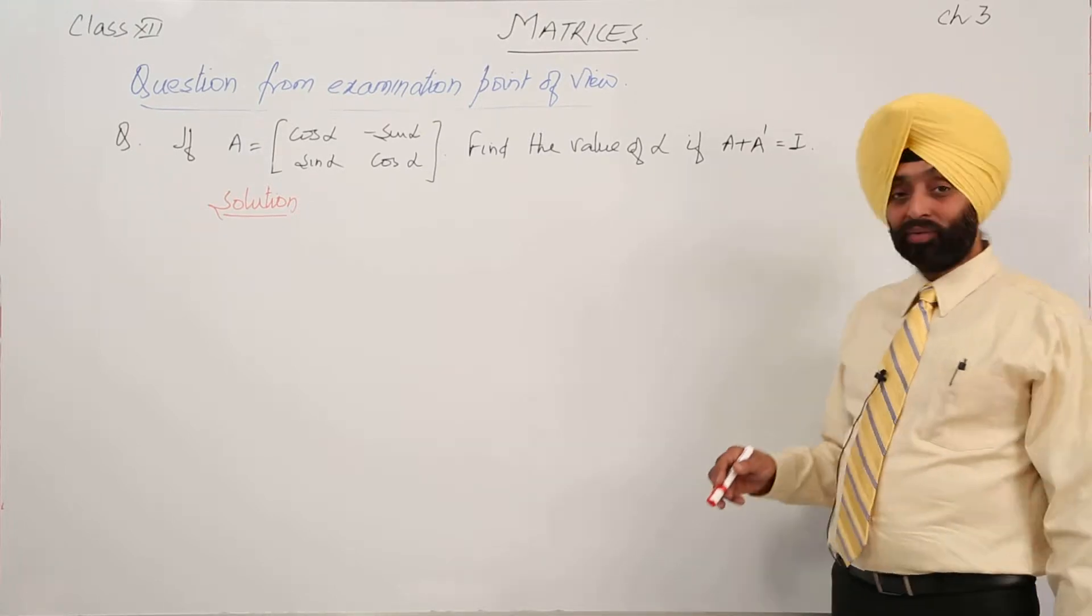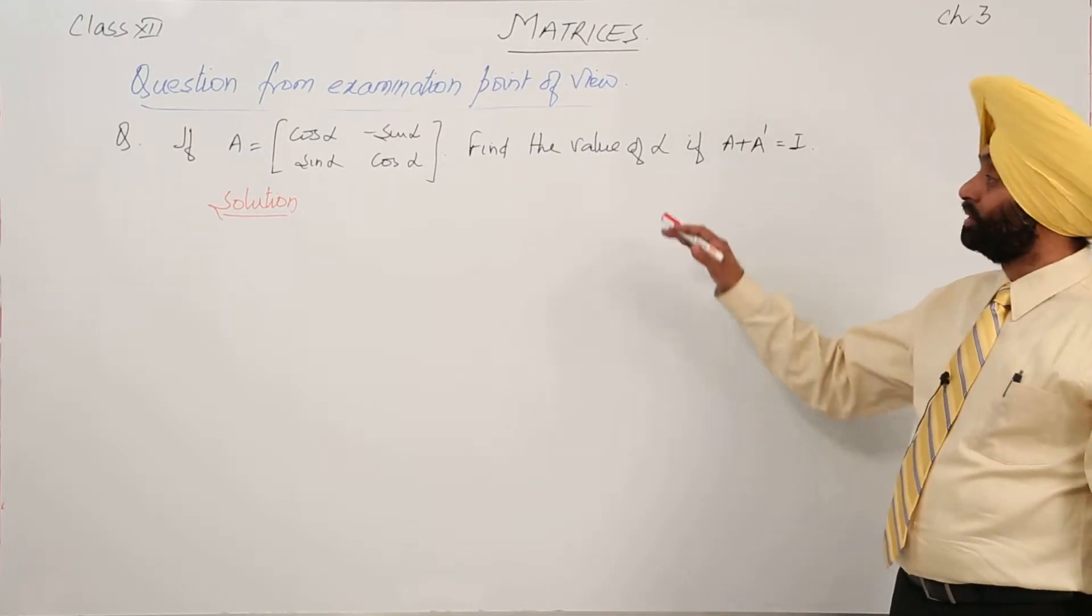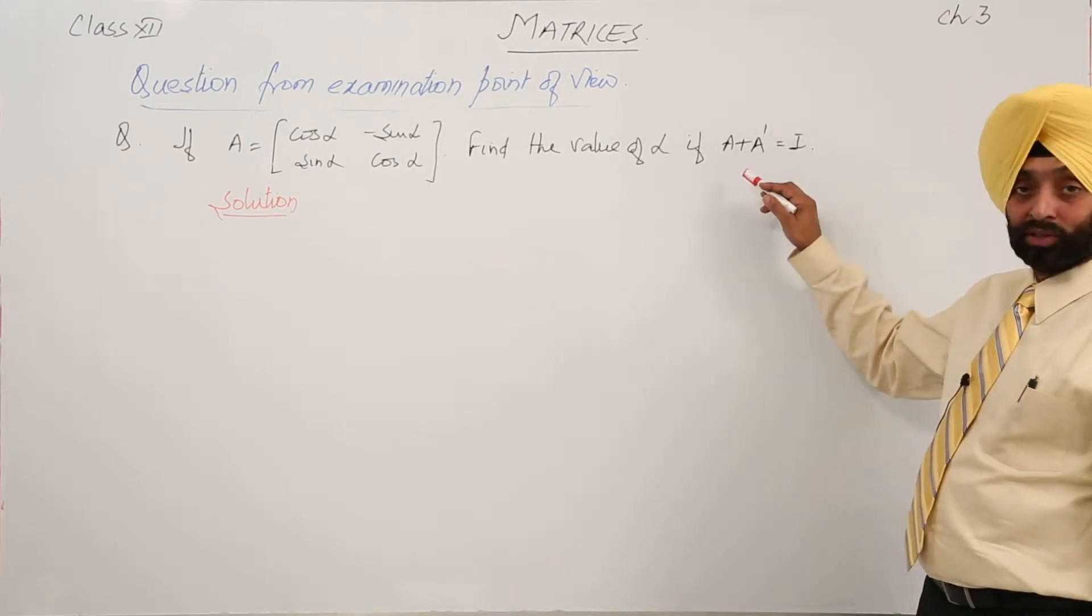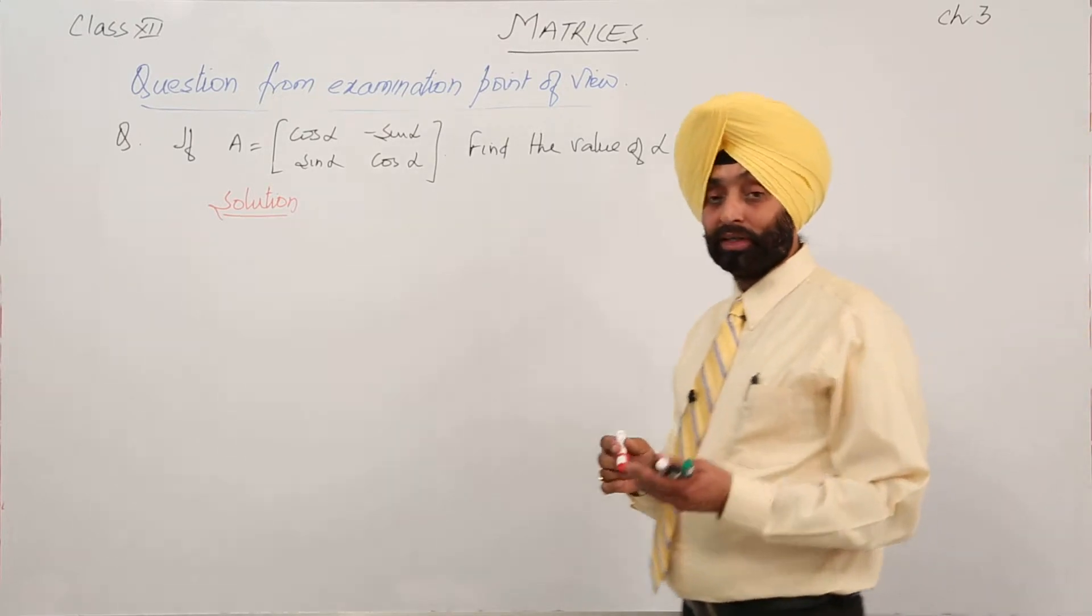In this question, we have to find the value of alpha, the angle of trigonometric ratios, when the condition is given: A plus A transpose is equal to the identity matrix.